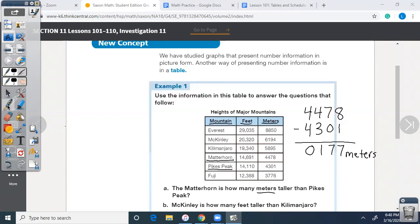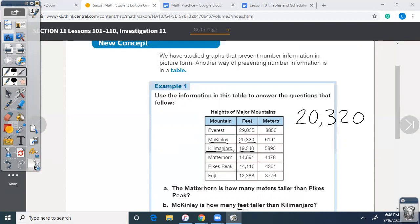And the next one is McKinley is how many feet taller than Kilimanjaro? This time we're doing feet. So I'm going to go to McKinley and then go across to feet. McKinley is 20,320 feet. Kilimanjaro is 19,340 feet. So I'm going to subtract 19,340. We're trying to figure out how much taller one mountain is than the other. We're not going to add them up because the two mountains aren't sitting on top of each other. That's crazy.